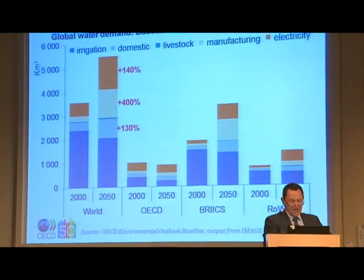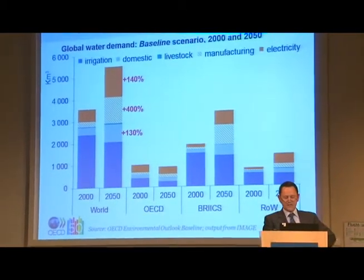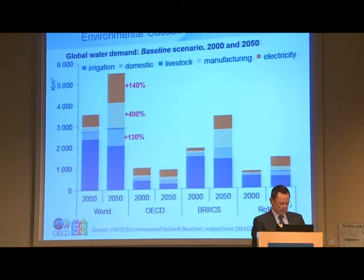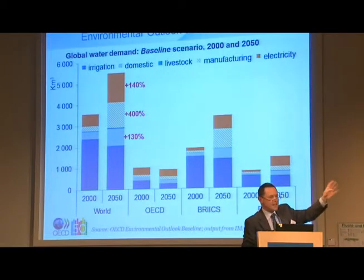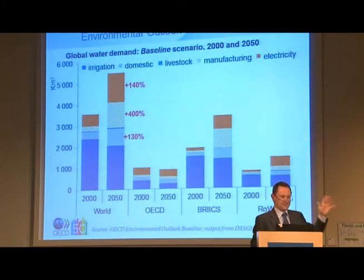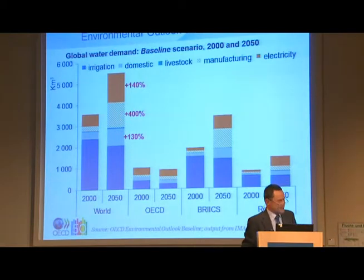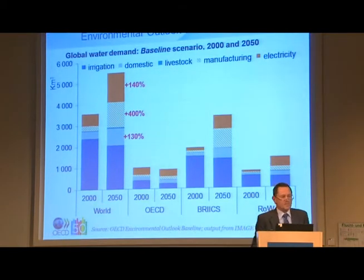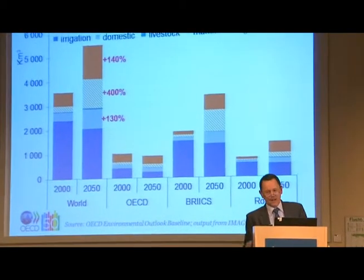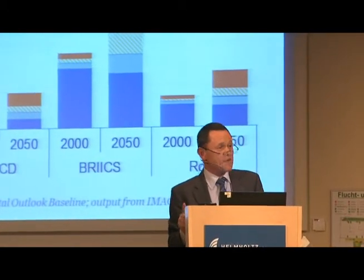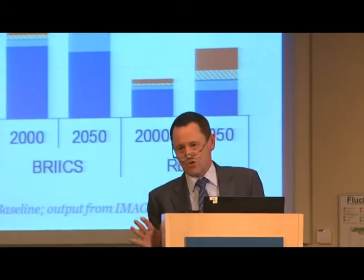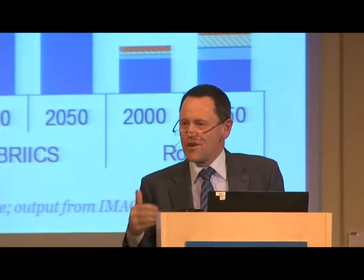There are the breakouts by group: a bit of a decline in the OECD, big increases in the BRICS and the rest of the world. This is a very significant finding for policy makers. If you do not change the way you are using water - regarding it as free and limitless - these are the sorts of claims you face. The result is that 40% of the world's population, another couple of billion people beyond today, will be living in river basins under severe stress by 2050. That is a very sobering thought.